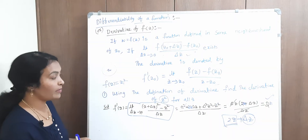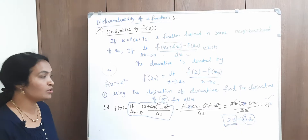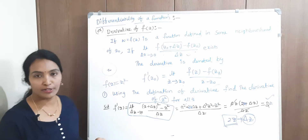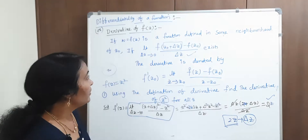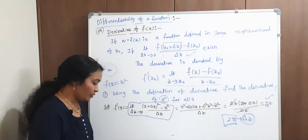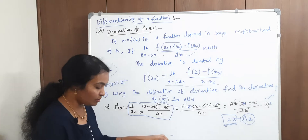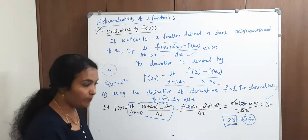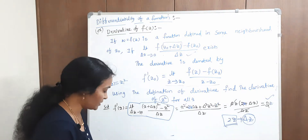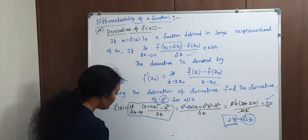So z square differentiation gives 2z, just like x power n differentiation gives n x power n minus 1. That's the principle. Using this, let's apply it to more problems — watch the video till the end and try to understand.